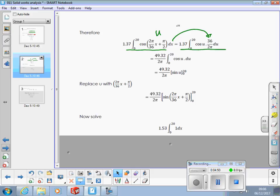Now we solve the other half of the original integral, so that becomes 1.53, the constant 1 becomes x again, so that's 1.53 x between x is equal to 0 and 20. All right? Good.